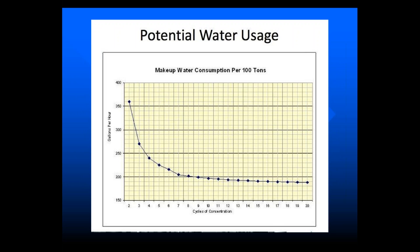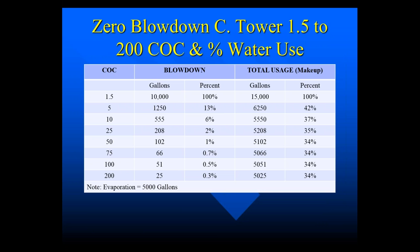This graph shows cycles of concentration versus gallons per hour used. As you increase your cycles, you decrease the gallons used, and by the time you get to 20 cycles you've leveled off. If you go to 10 cycles of concentration you've saved about 35%; going to 25 to 200 cycles, you haven't saved any more water really. So if you're wanting water savings, once you get to 20 to 25 cycles, you've saved all the water you're going to save.